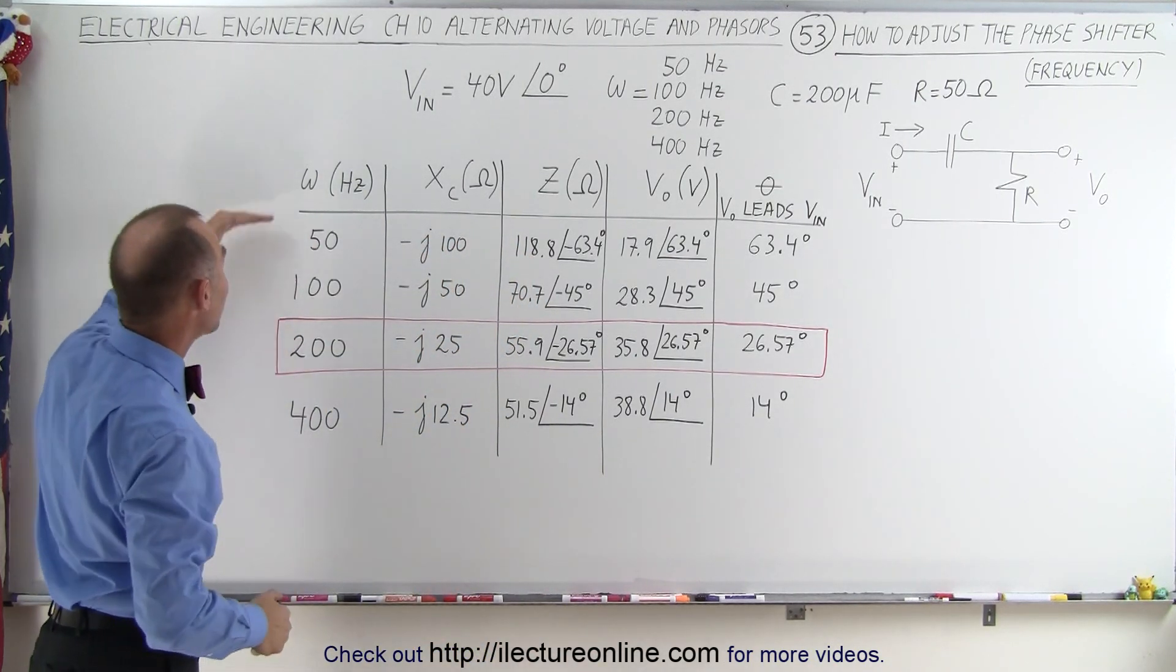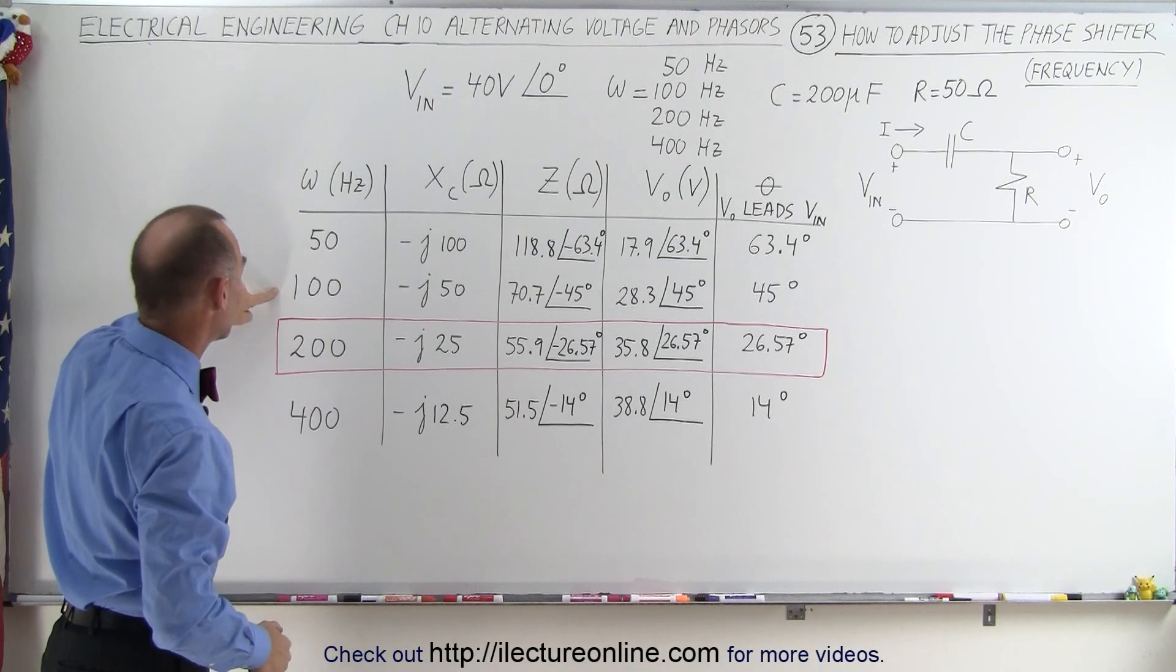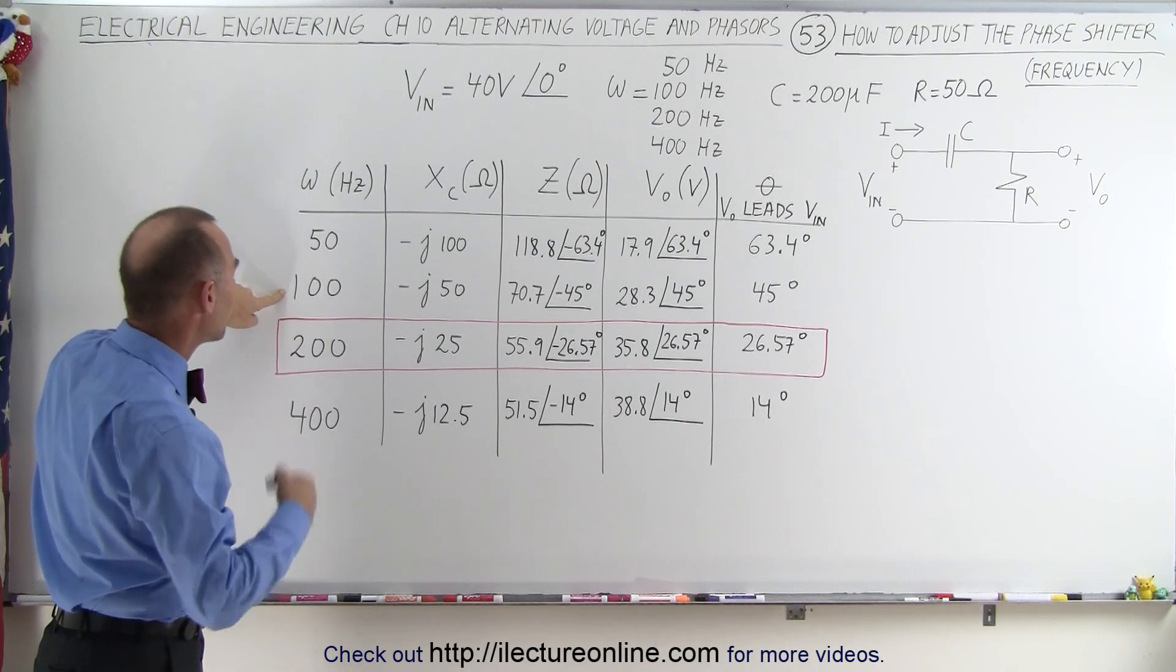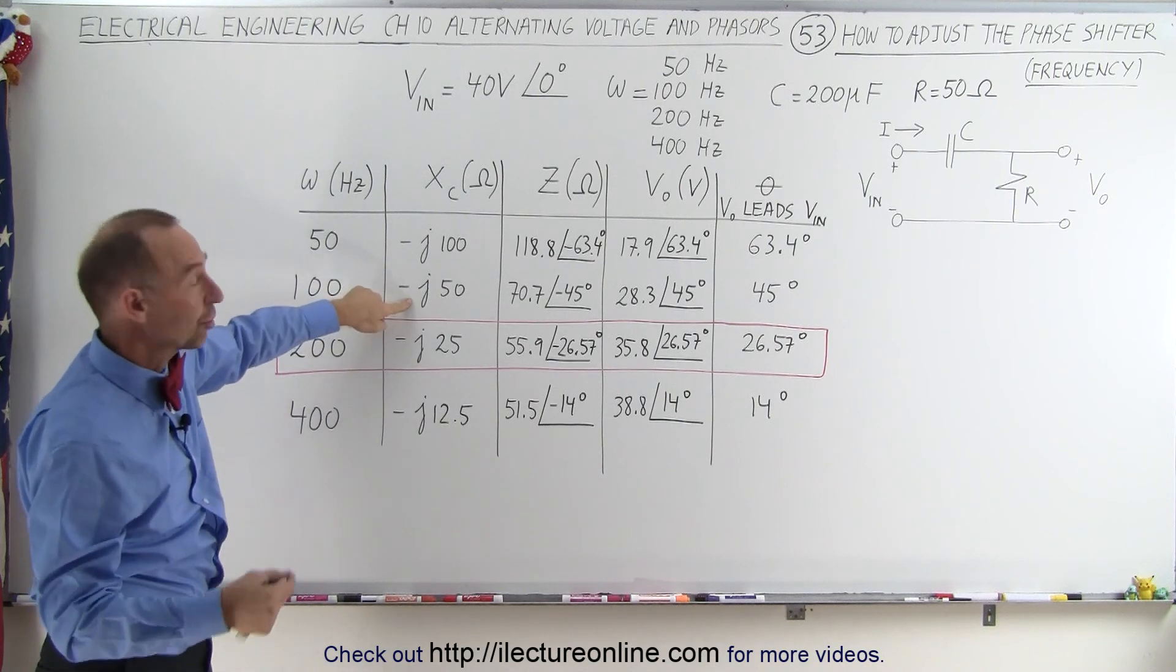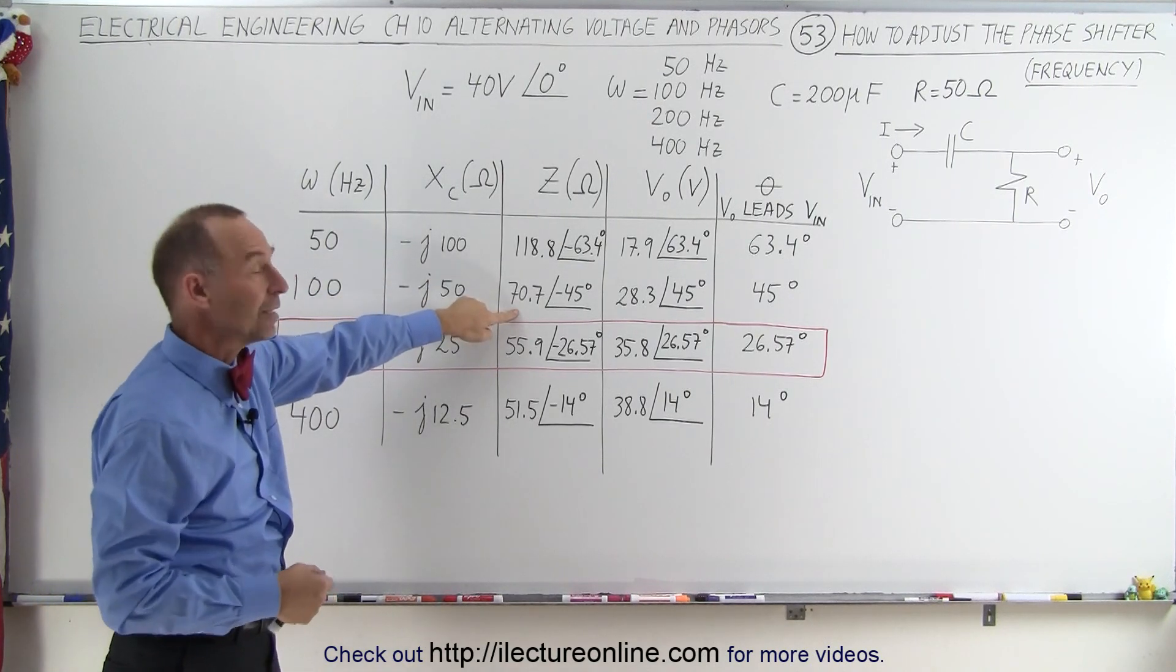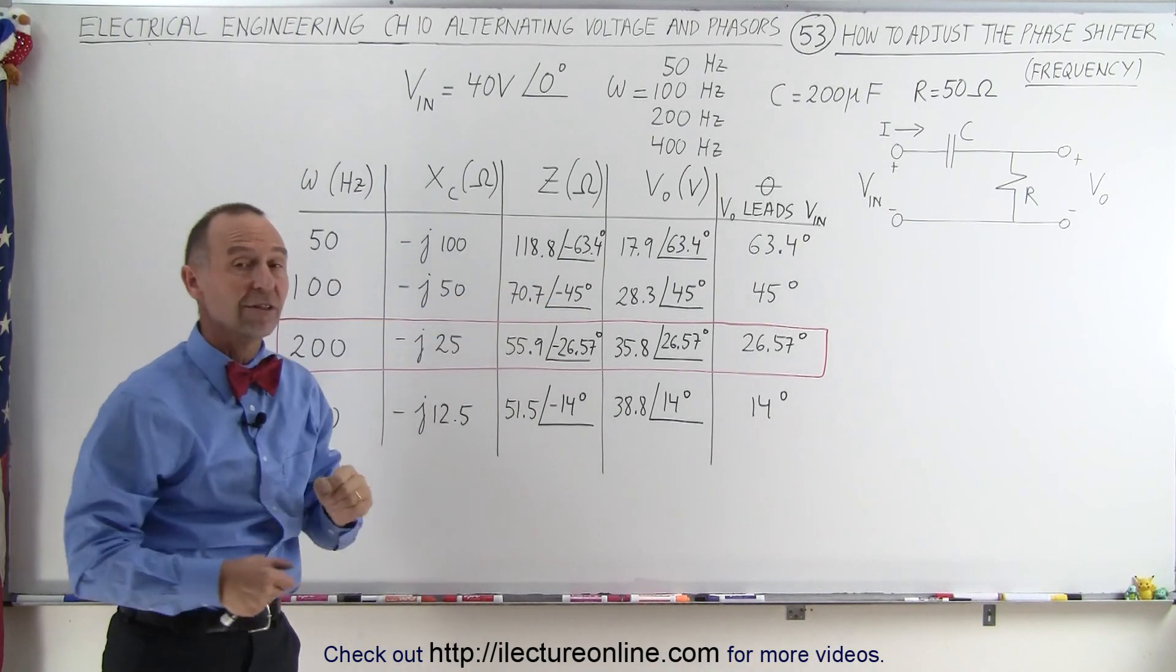Now, what happens when we make the frequency smaller, instead of 200 Hz we drop it down to 100 Hz? A smaller frequency means we're going to have a larger capacitive reactance, which means we're going to have a larger impedance and a greater phase difference in the impedance.